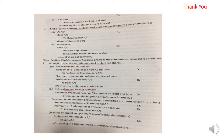For redemption at premium, the entry is: Redeemable Preference Share Capital Account debit, and Premium on Redemption Account debit — for example, face value plus premium of 5 — to Preference Shareholders Account. Then the final payment entry is: Preference Shareholders Account debit to Bank Account. We will learn the problem-based application in the next class. Thank you.